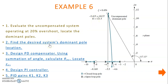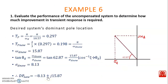The next step is to find the desired system dominant poles using the given specifications. We then proceed to design the PD compensator, followed by the PI controller. Finally, we determine the PID gains — proportional K1, integral K2, and derivative K3. The first step is to evaluate the performance of the uncompensated system to determine how much improvement in transient response is required.